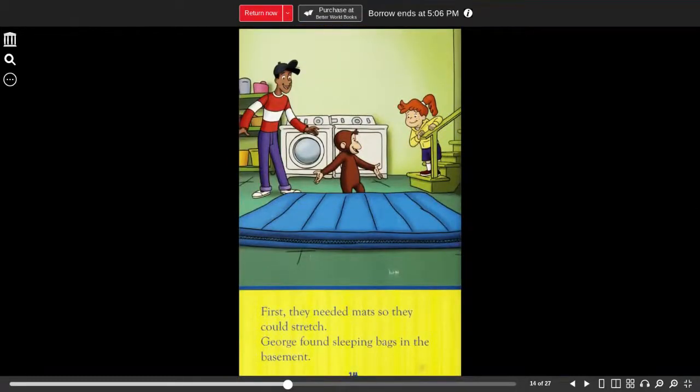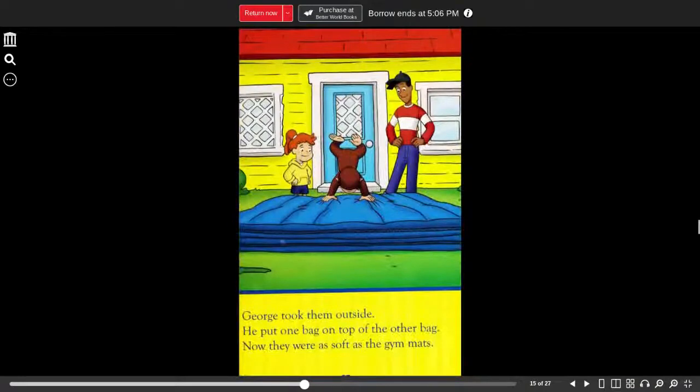First, they needed mats so they could stretch. George found sleeping bags in the basement. George took them outside. He put one bag on top of the other bag. Now, they were as soft as the gym mats.